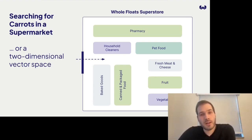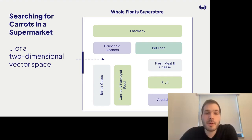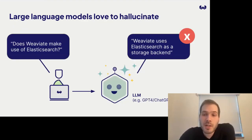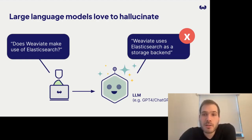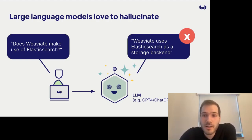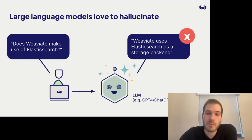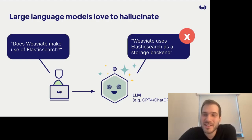That was the starting idea four years ago when we started Weaviate. But since then, ChatGPT came along, and with it a new use case — but also a new problem: large language models hallucinate. If you ask ChatGPT 'does Weaviate make use of Elasticsearch?' it actually says yes — which is a hallucinated, confident, but wrong answer. If there's one takeaway from this session, it's that Weaviate does not use Elasticsearch in its architecture.